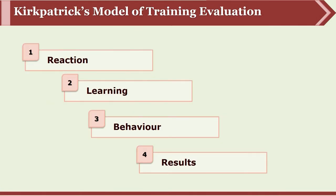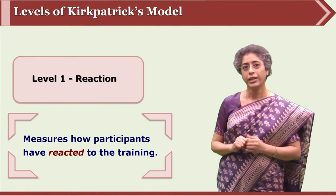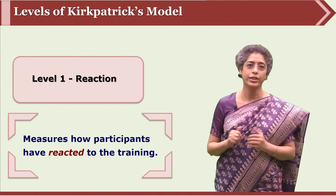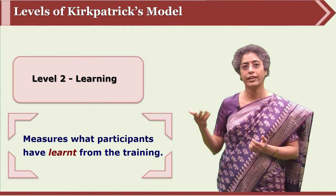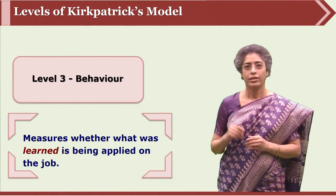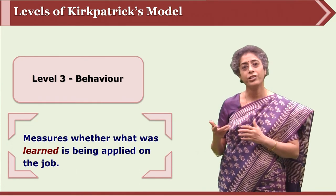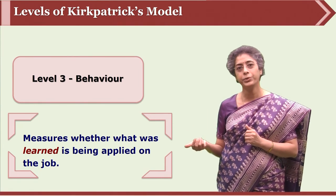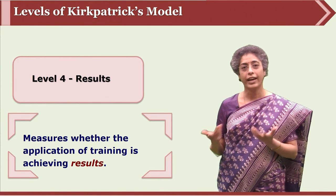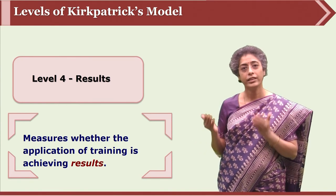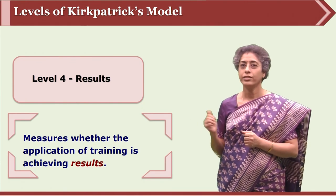There are four levels in this model: Reaction, Learning, Behavior, and Results. The Reaction level measures how learners reacted to the entire training program. The Learning level measures what kind of learning happened and what learners exactly learned from the training. Only reaction and learning are not enough — how behavior changed and how learners applied their learning into their behavior can be tested at the Behavior level. And most importantly, whether the training program is achieving any results in that particular organization can be measured at the Result level.